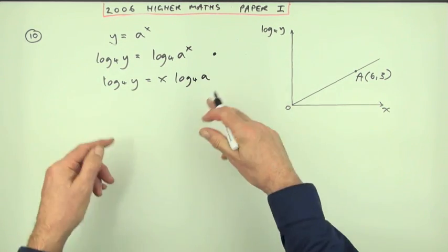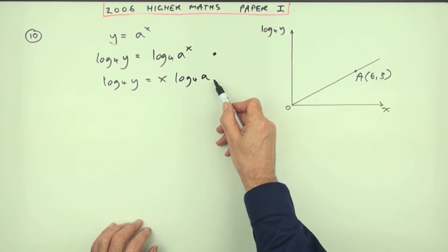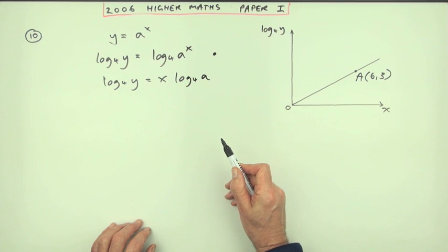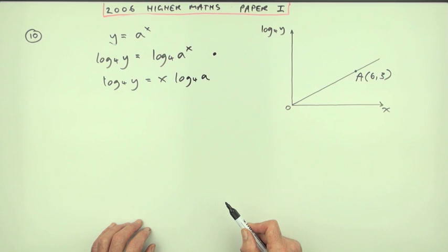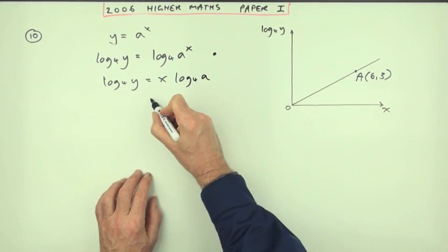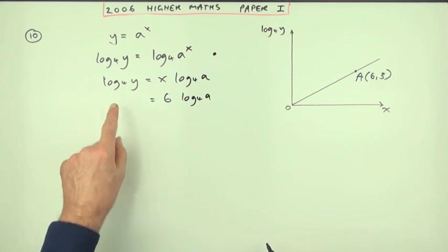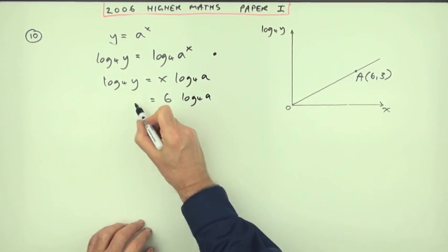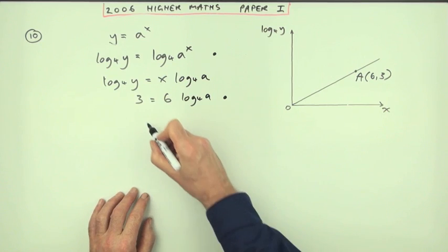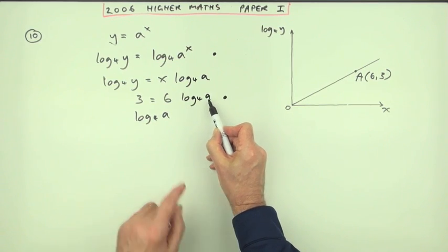Taking logs of both sides would be one mark. The next step is just to substitute in the values. This says when x is 6, so that means I've got 6 log base 4 of a. Remember, log base 4 of a is just a number - there's only the one unknown. Log base 4 of y, which is the vertical component, is 3. That's worth a mark.